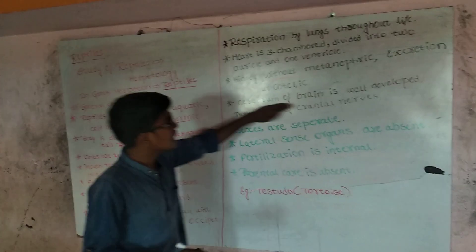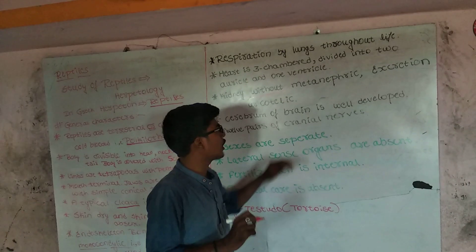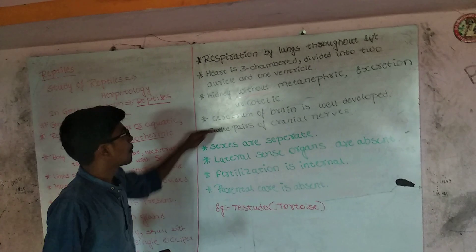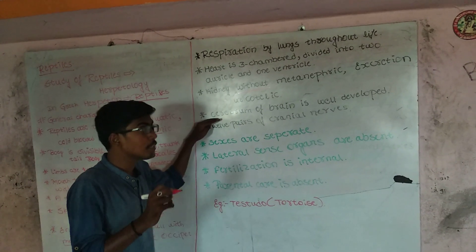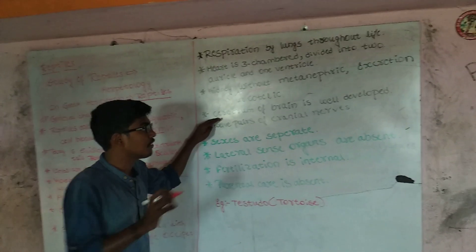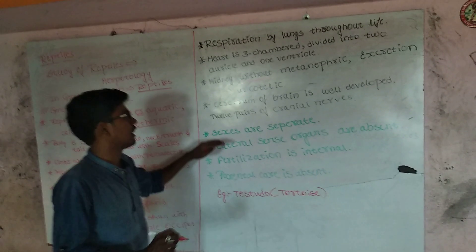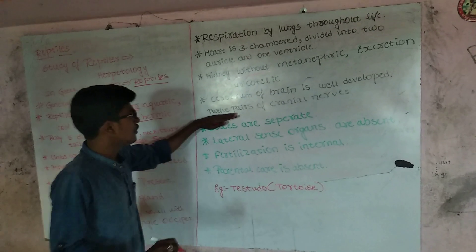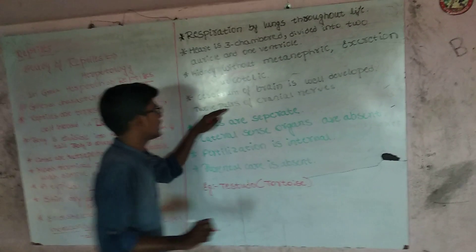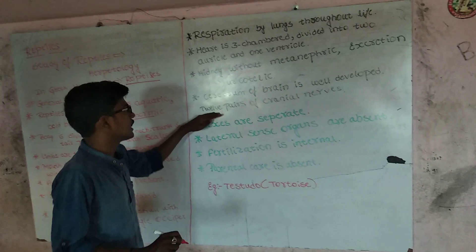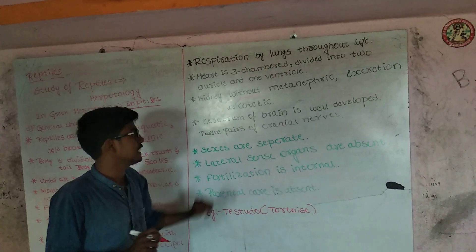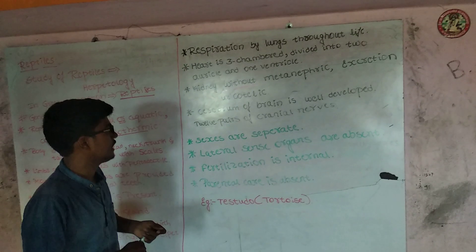Cerebrum of the brain is well developed in the case of reptiles. But in the case of amphibians, cerebrum of the brain is not well developed. Twelve pairs of cranial nerves are present in reptiles, but in the case of amphibians, 10 pairs of cranial nerves are present.